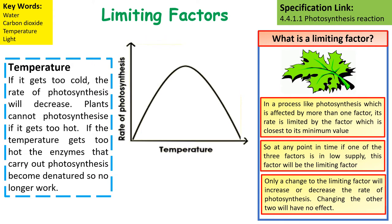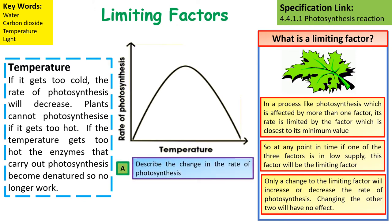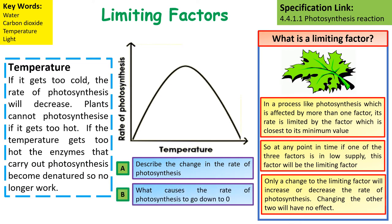Temperature is the third limiting factor. If it gets too cold, the rate of photosynthesis will decrease. Plants cannot photosynthesise if it gets too hot either — the enzymes that carry out photosynthesis will denature and will no longer work, so the rate of photosynthesis will decrease. Looking at the graph, the rate of photosynthesis increases until a certain point, and after that certain temperature it will decrease, because the enzymes carrying out photosynthesis become denatured and no longer work.